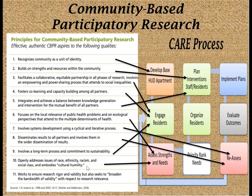Particularly the economic element — both the social and the economic elements need to be looked at and implemented over time. Ten, openly addressing issues of race, ethnicity, racism, social class, and cultural competency. Eleven, works to ensure research rigor and validity but also seeks to broaden the bandwidth of validity with respect to research relevance. That's part of this participatory research where the residents are as involved in the research dimensions as the faculty and students engaging with them. This is a summary of community-based participatory research as it meshes with the CARE process.